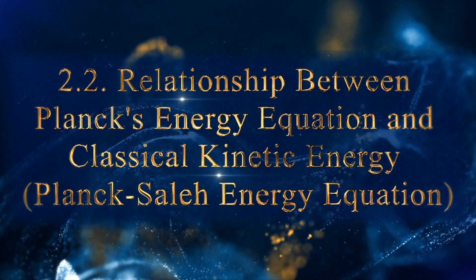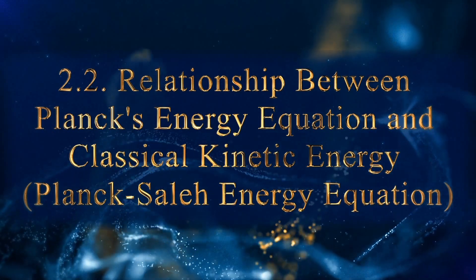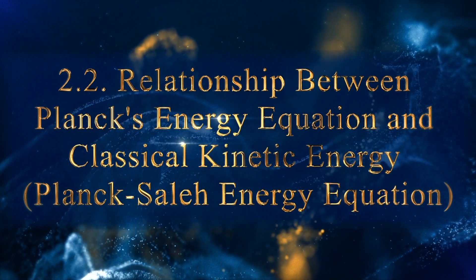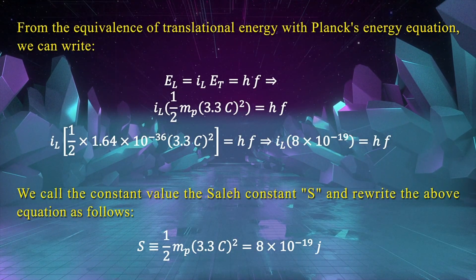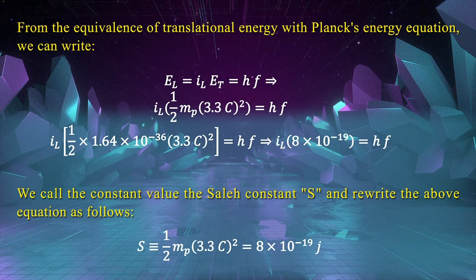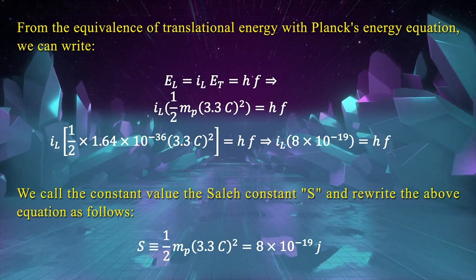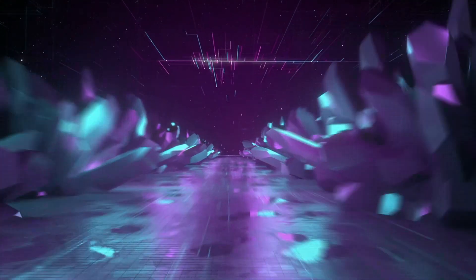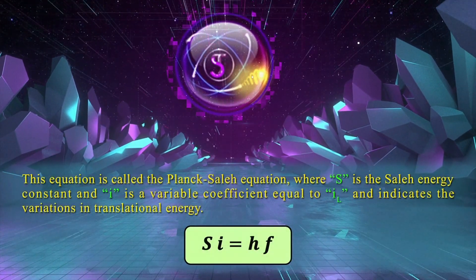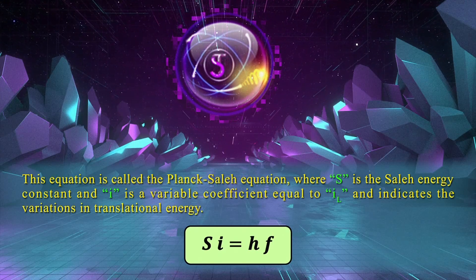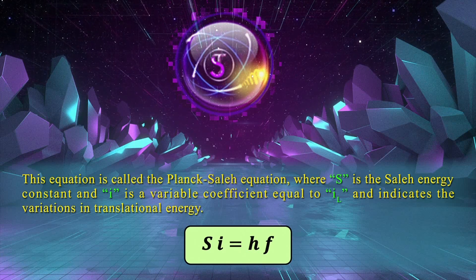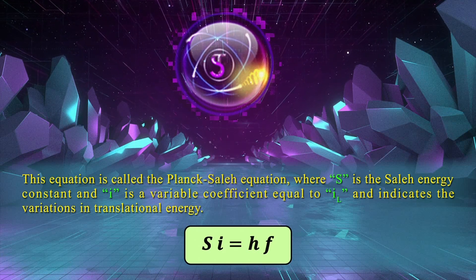Relationship between Planck's energy equation and classical kinetic energy — the Planck-Saleh energy equation. From the equivalence of translational energy with Planck's energy equation, we can write the result. We call the constant value the Saleh constant S and rewrite the equation accordingly. This equation is called the Planck-Saleh equation, where S is the Saleh energy constant and I is a variable coefficient equal to I_L, indicating the variations in translational energy.